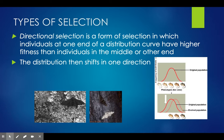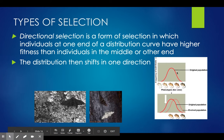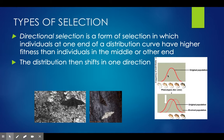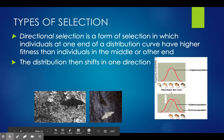There are three types of selection. Directional selection is a form of selection in which individuals at one end of the distribution curve have a higher fitness than the individuals in the middle or other end, so the distribution shifts one direction. Think about the rabbit example — the white rabbits would do better than the dark colored rabbits, so the graph would shift one way to favor one type of phenotype or physical trait.